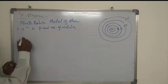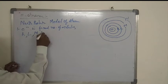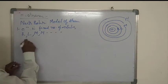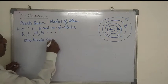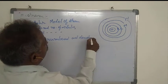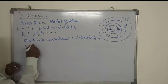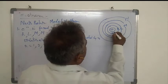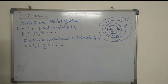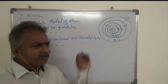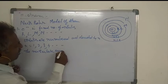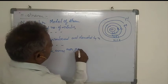These orbits are denoted as K, L, M, N and so on. These orbits are also numbered and denoted by n, where n = 1, 2, 3, 4 and so on. As long as electrons revolve in their orbits, they neither lose energy nor gain energy.